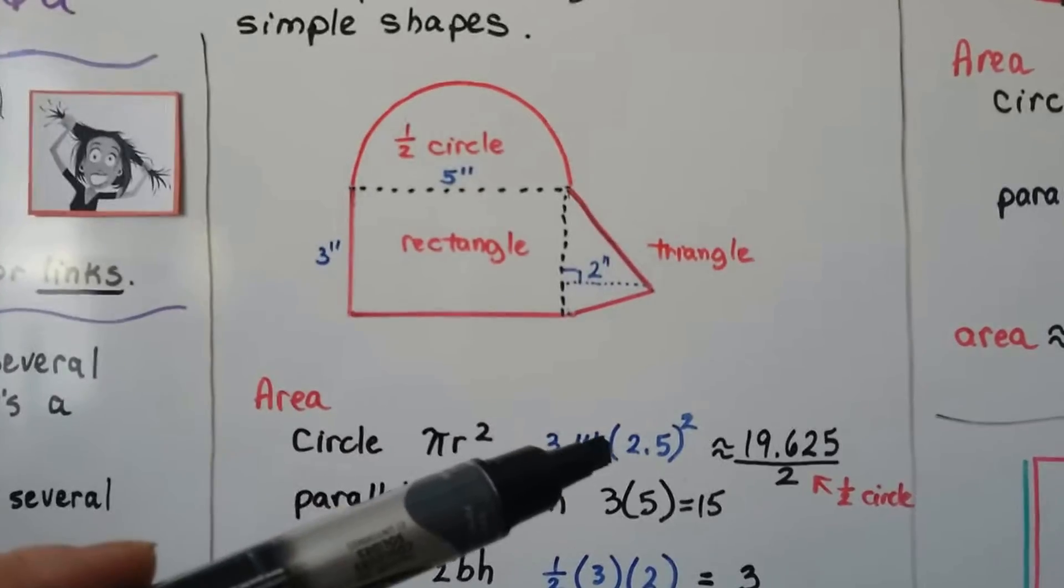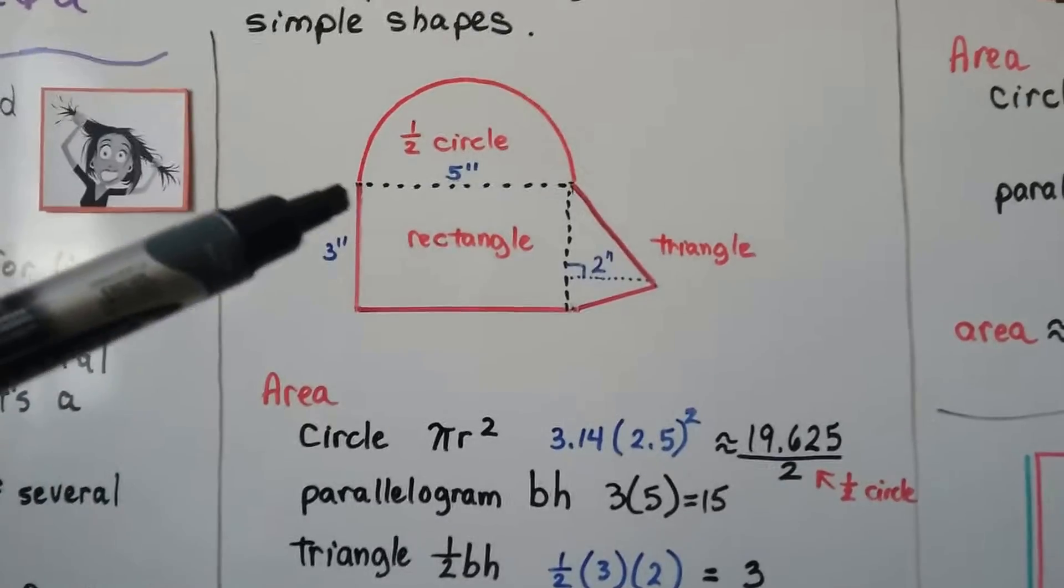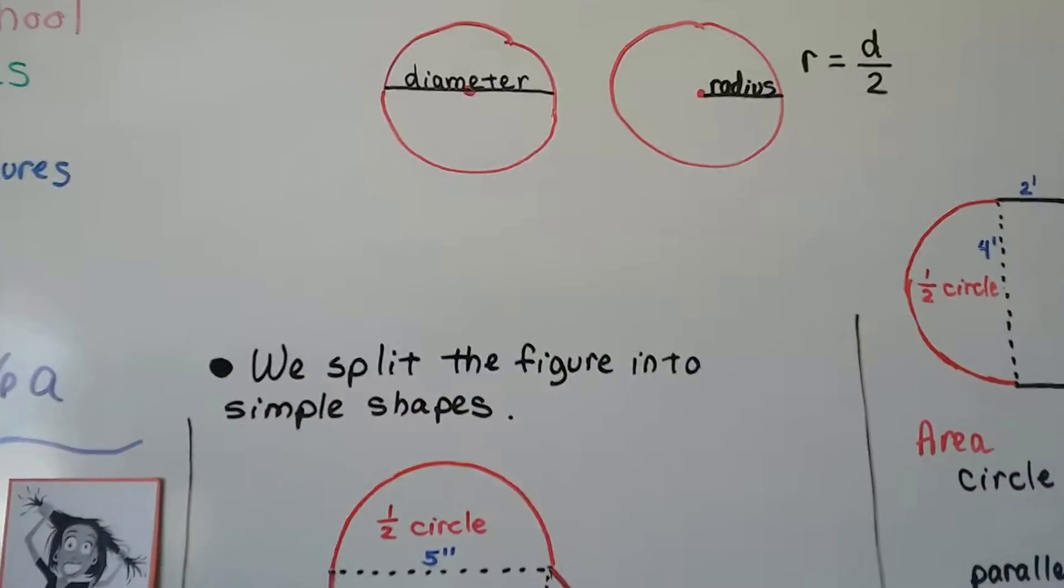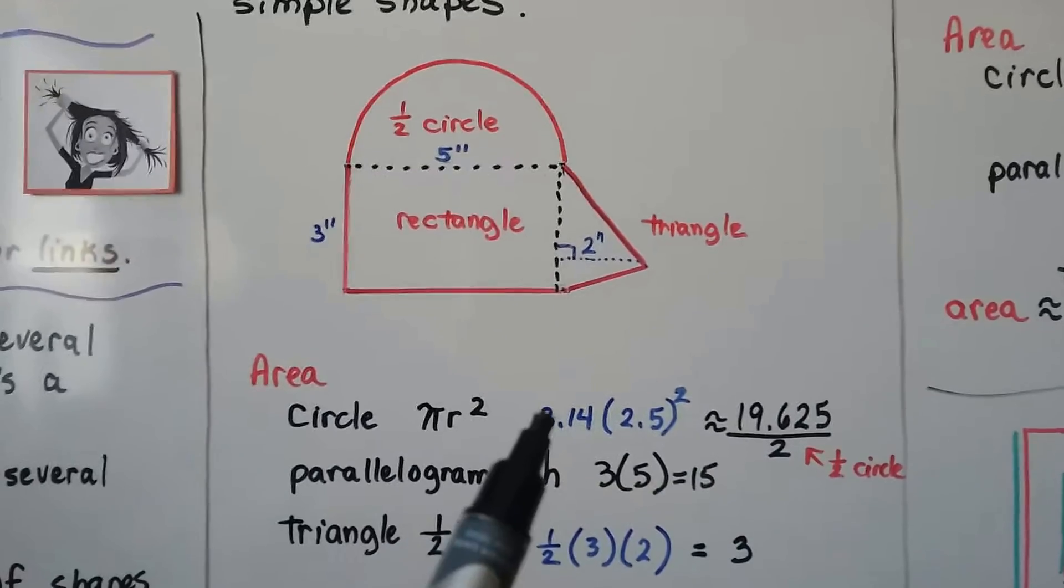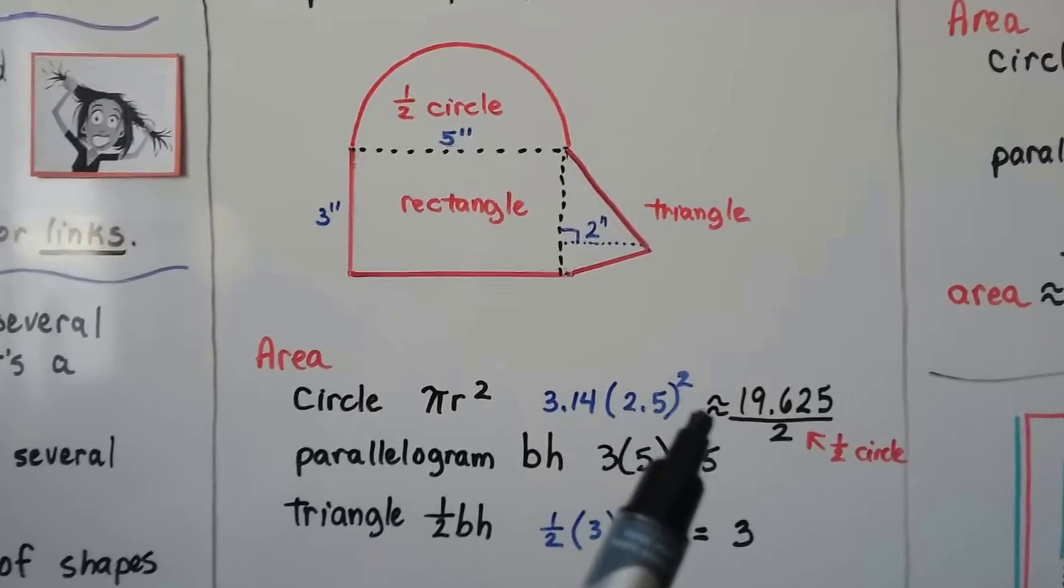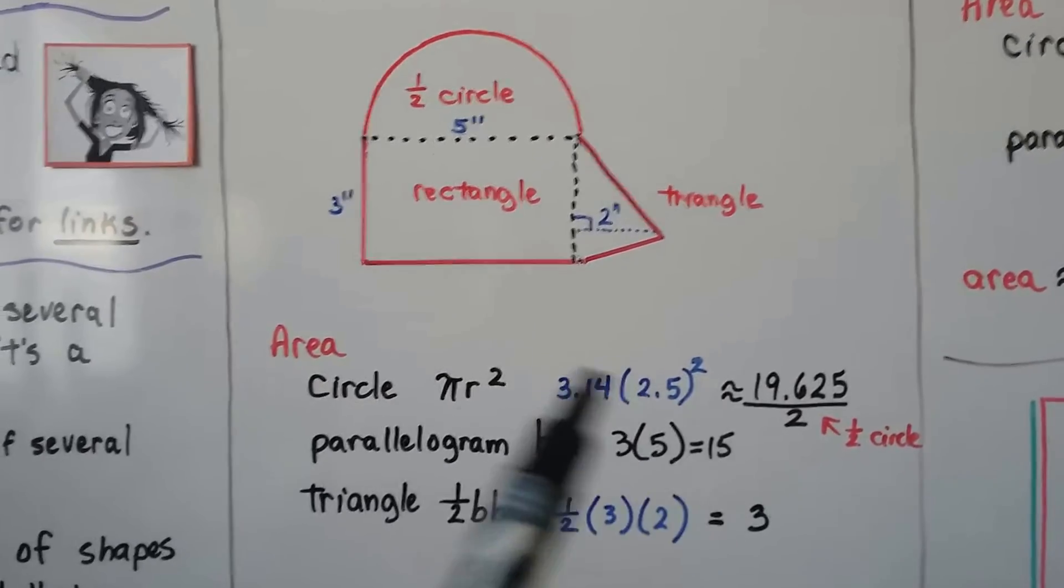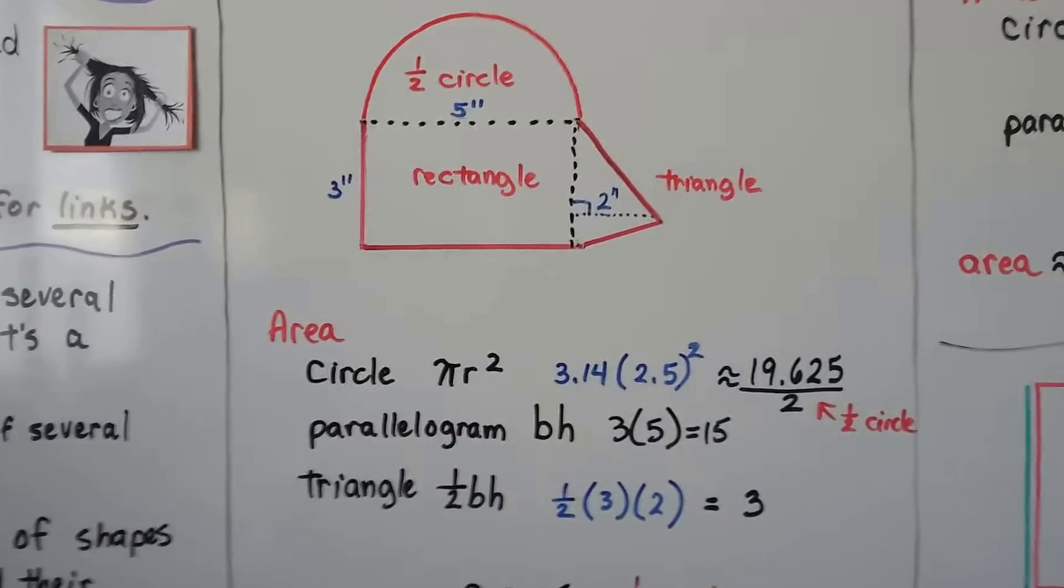That would be 3.14. And we don't see the radius, but we see that this is 5 inches across. Remember, that would be the diameter. So, the radius is half of that. Half of 5 is 2.5. So, that means we have 3.14 times 2.5 squared. That's going to be approximately 19.625. That's the area of a full circle. We only have a half circle, so we have to remember to divide that by 2.